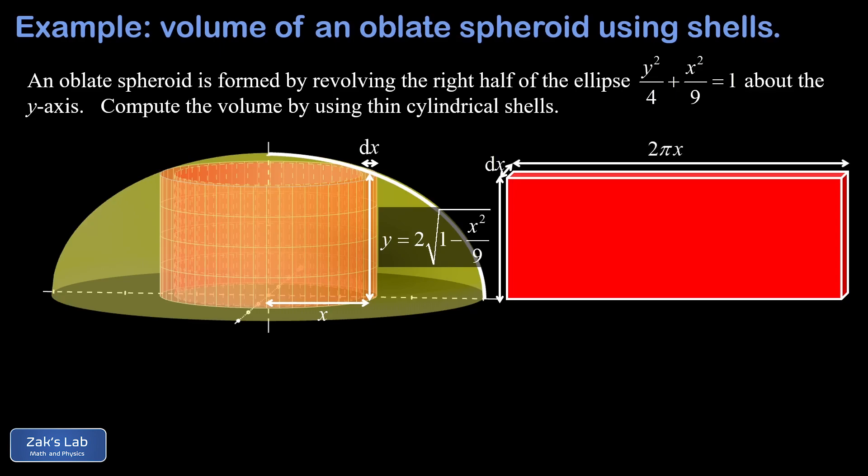Finally, the length of the slab is the same thing as the circumference of our shell before we cut and unrolled it. So we use the circumference formula 2 pi r, but the radius of the shell was x, so the length of our slab is 2 pi x.